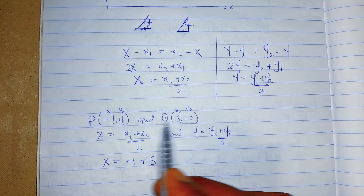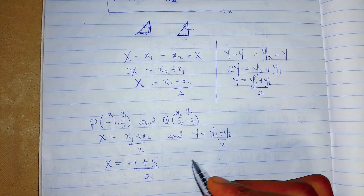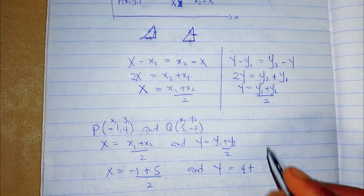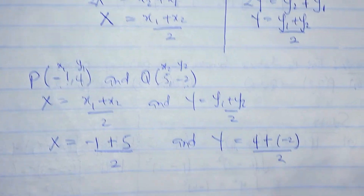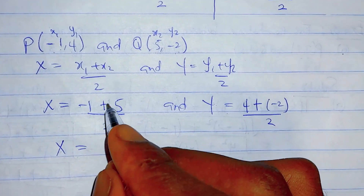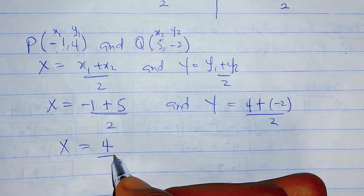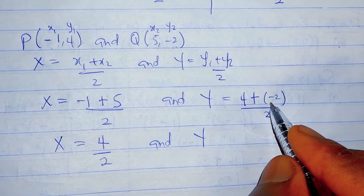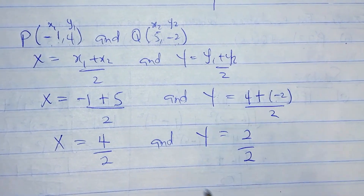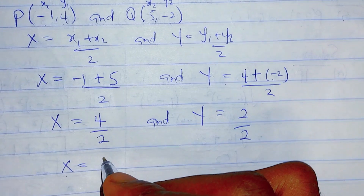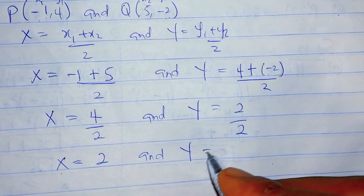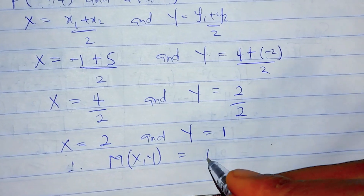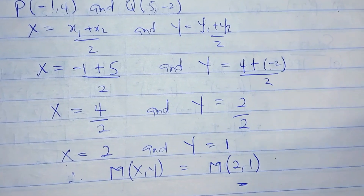So x = (-1 + 5) / 2 and y = (4 + (-2)) / 2. That gives x = 4 / 2 = 2, and y = 2 / 2 = 1. Therefore the midpoint M(x, y) becomes M(2, 1).